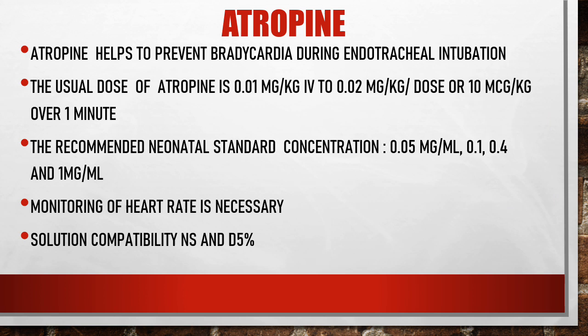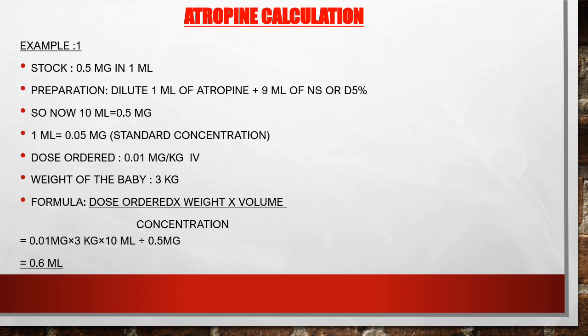Solution compatibility: normal saline and D5%. Atropine calculation — stock: 0.5 mg in 1 ml. Preparation: dilute 1 ml of atropine plus 9 ml of normal saline or D5%. After dilution we have 10 ml which contains 0.5 mg. Therefore 1 ml equals 0.5 mg divided by 10 ml, giving 0.05 mg/ml as the standard concentration.